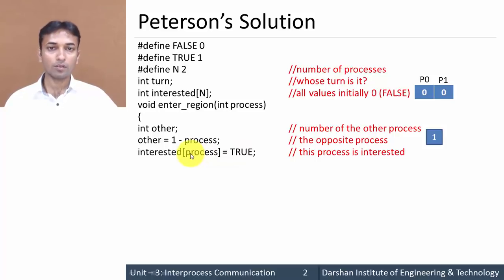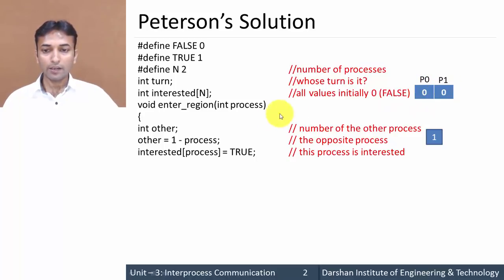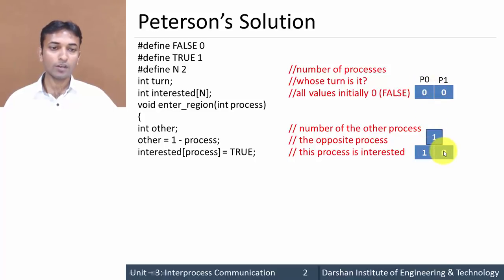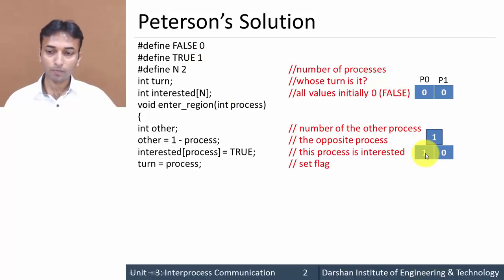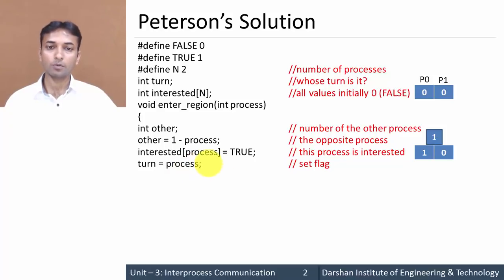Next, `interested[process] = true` sets the current process's interest flag to 1. Since process is 0, the first element of the array becomes 1, so the array is now [1, 0]. Then `turn = process` assigns the value of process to turn. Since process is 0, turn becomes 0.